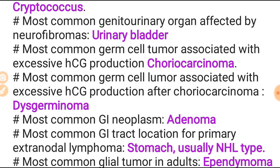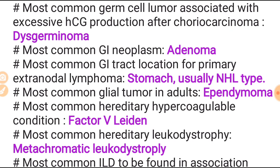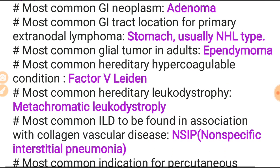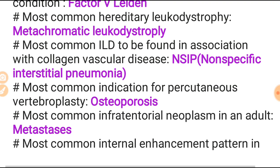Most common germ cell tumor associated with excessive HCG production is choriocarcinoma, followed by germinoma. Most common GI neoplasm is adenoma. Most common GI tract location for primary extranodal lymphoma is the stomach - usually it is NHL type, non-Hodgkin's lymphoma. Most common glial tumor in the adult is ependymoma. Most common hereditary hypercoagulable condition is Factor 5 Leiden. Most common hereditary leukodystrophy is metachromatic leukodystrophy. Most common ILD found in association with collagen vascular disease is non-specific interstitial pneumonia.